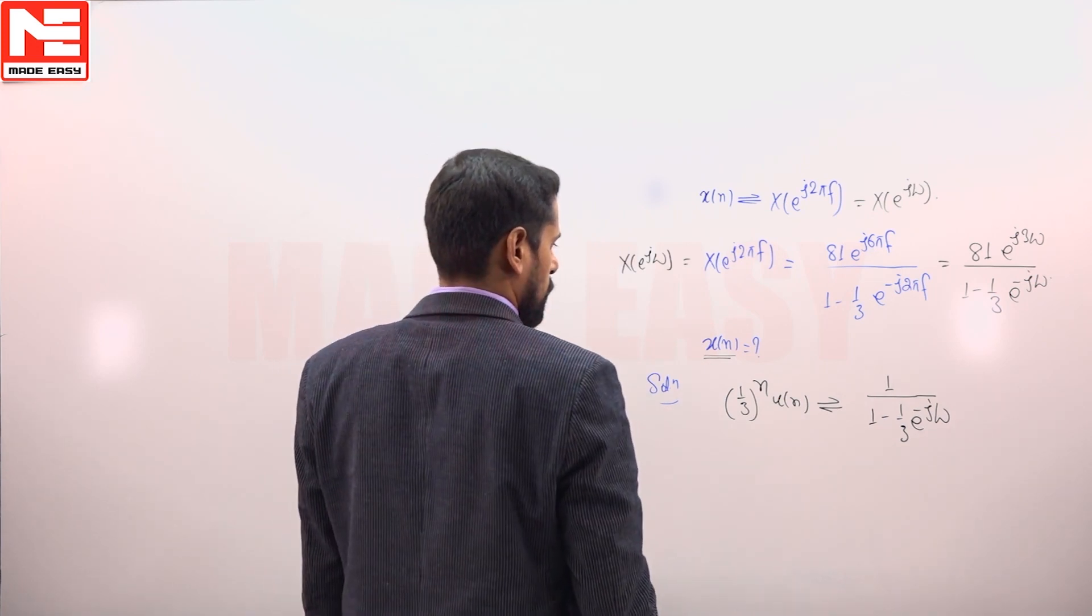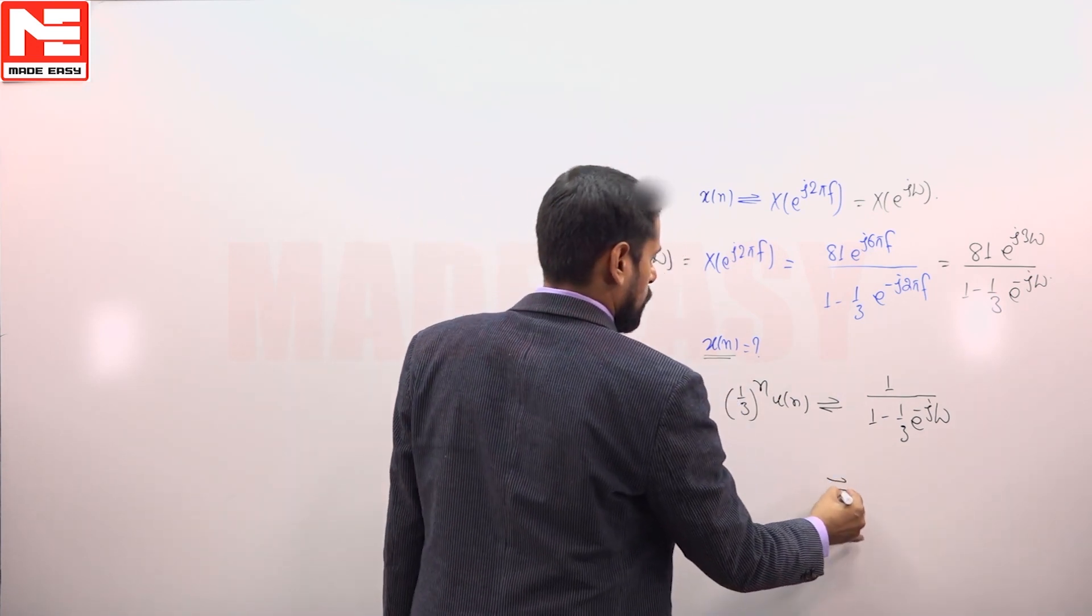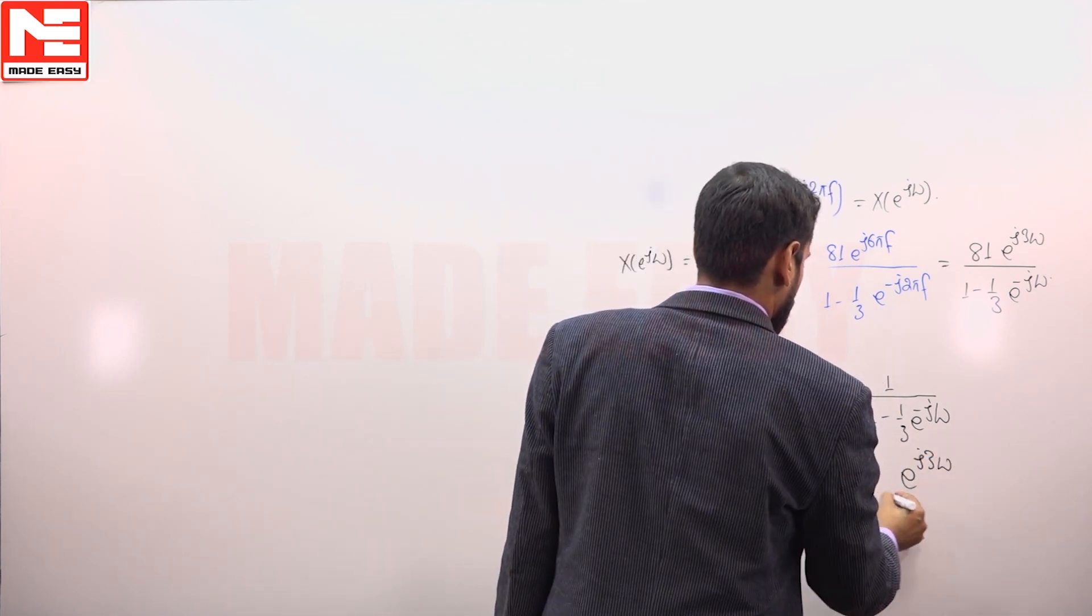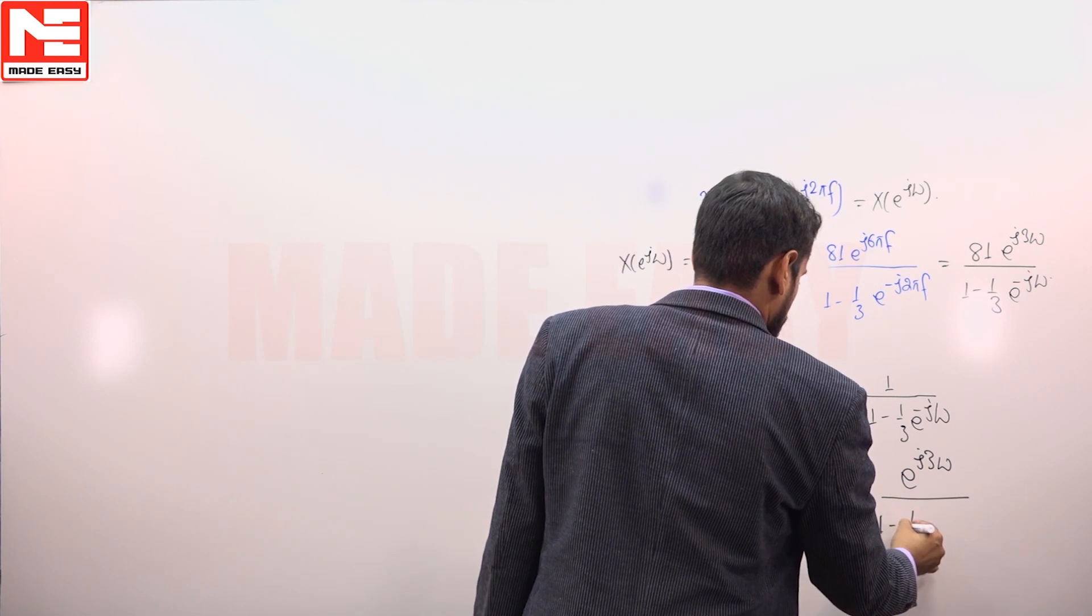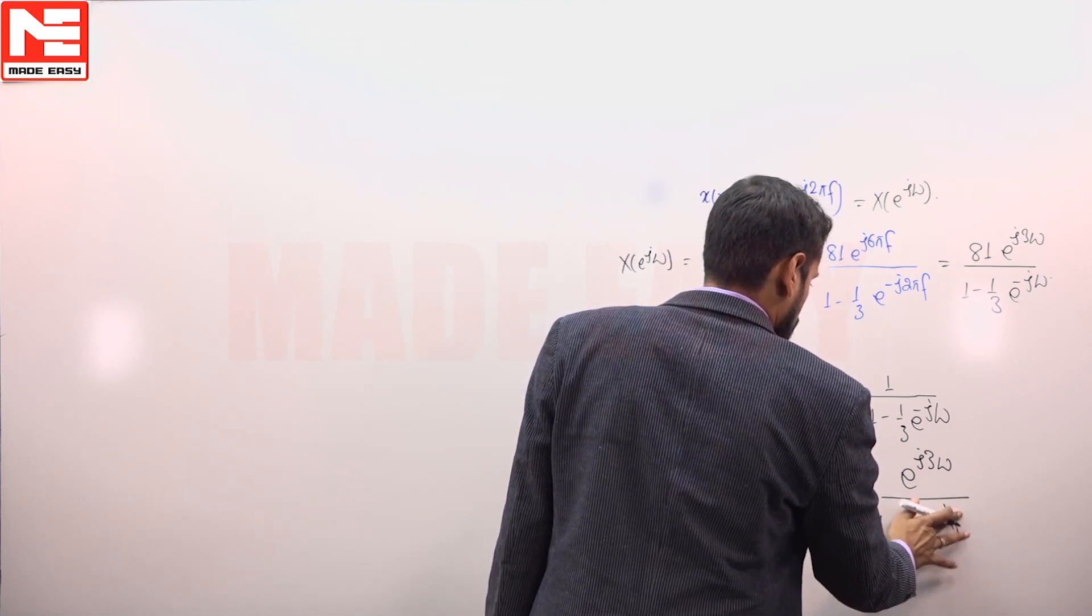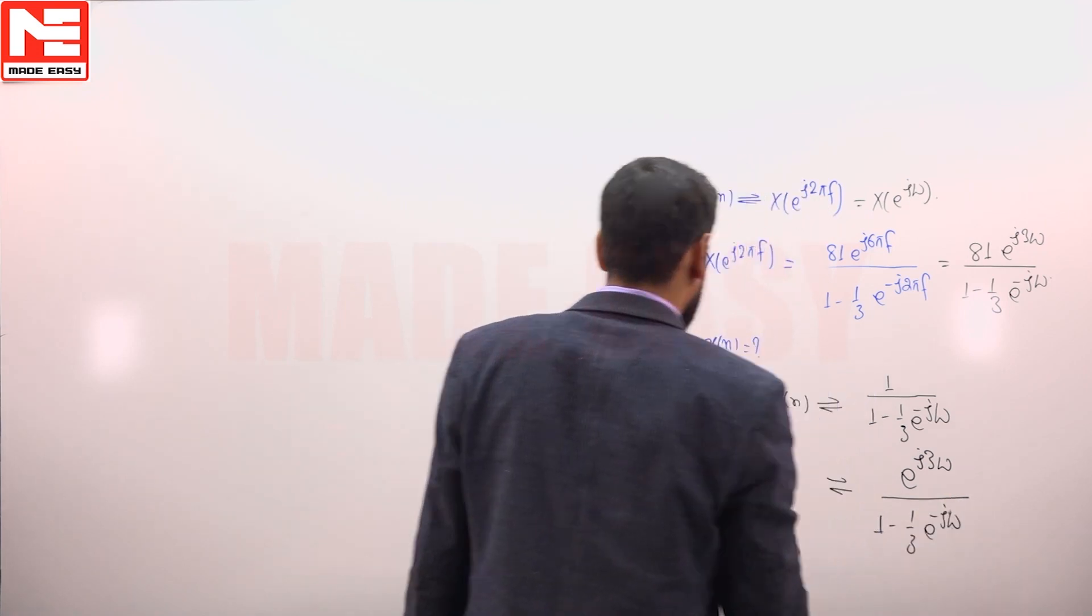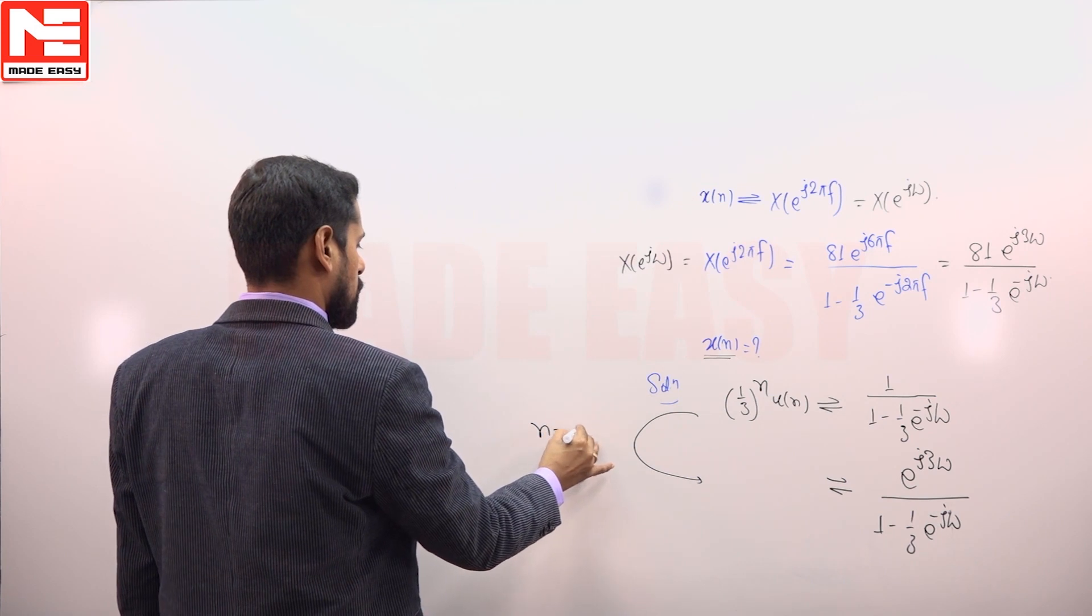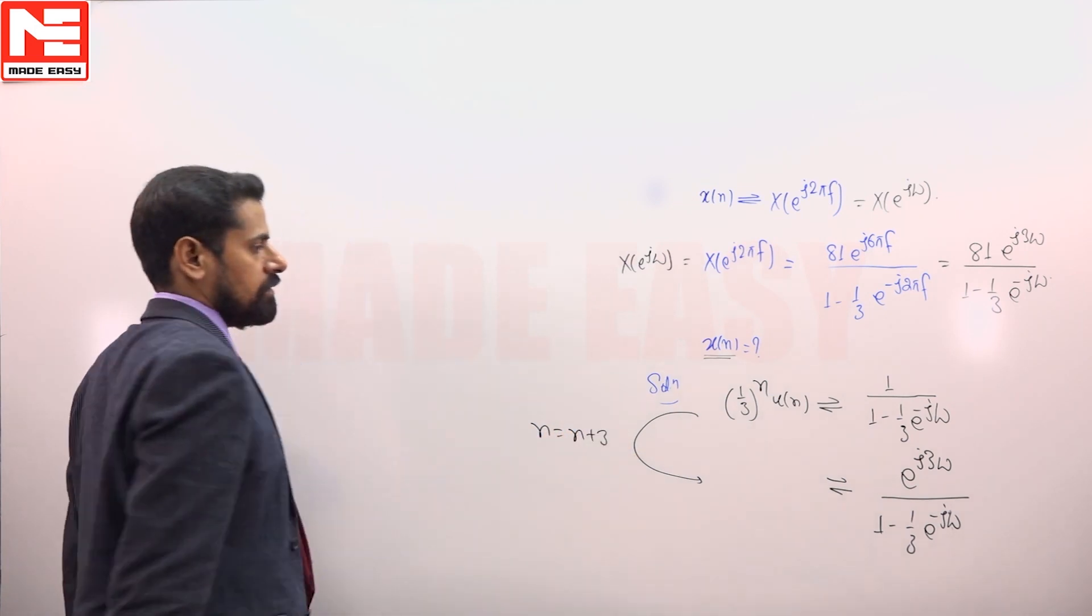Now if we will multiply this Fourier transform with e^(j3ω), then in time domain we will replace variable n with n plus 3.